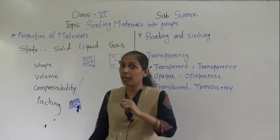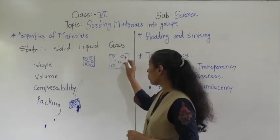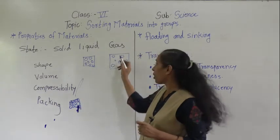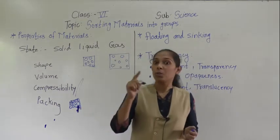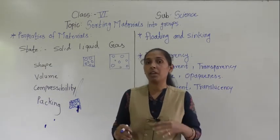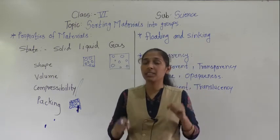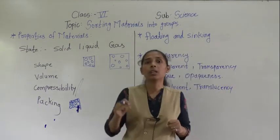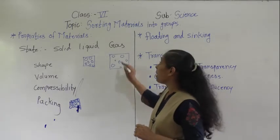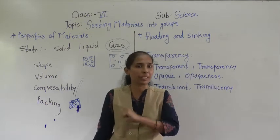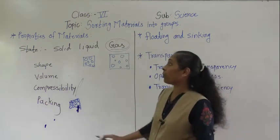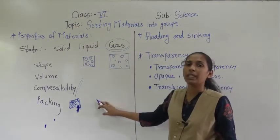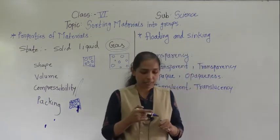Because there is so much space between gas molecules, we can compress them — we can make the molecules come together. For example, in carbonated cold drinks, carbon dioxide gas is mixed into the liquid at high pressure, because gases have high compressibility. This is all about the different states of material — solid, liquid, and gas — and their differences. Now we will move to the next property of material.